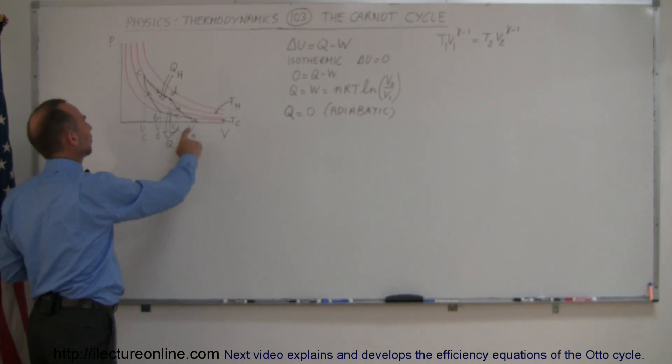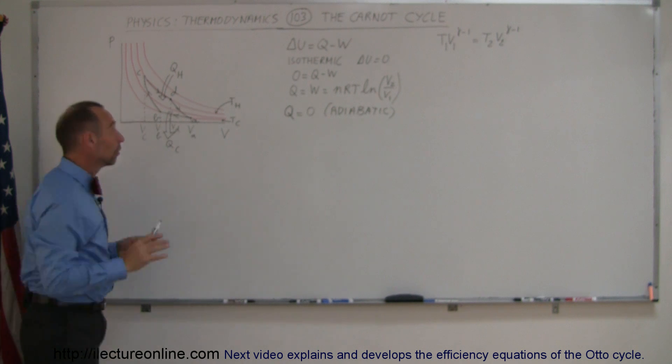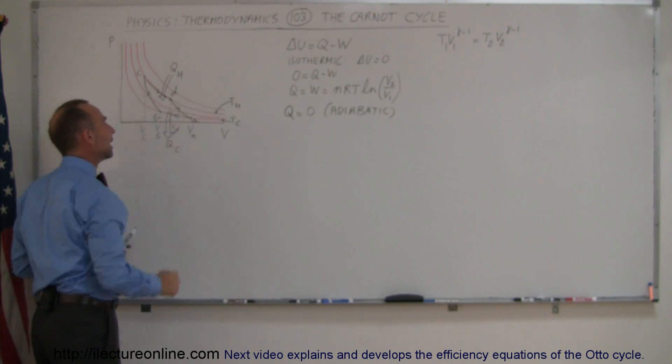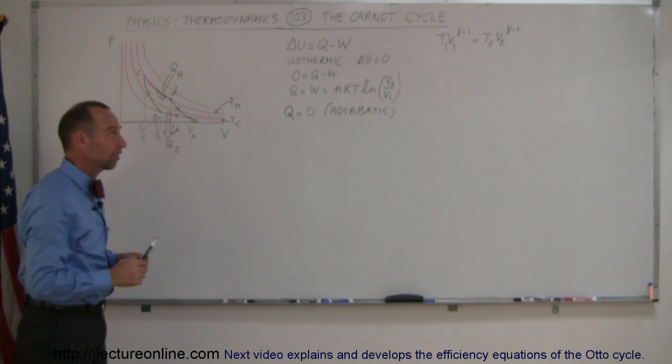We have a thermodynamic process that goes from A to B to C to D and back to A. From A to B, we go along the isotherms - that's an isothermic process. From B to C, that's an adiabatic process. From C to D, that's again an isothermic process. And from D back to A, that is an adiabatic process.